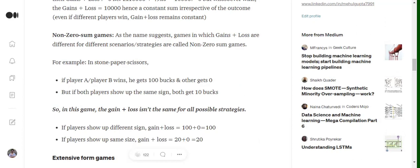if player A or player B wins, he gets 100 bucks. But if both of them show up the same sign, both get 10 bucks. So you can see that in different conditions, the total loss plus total gain equals different values.